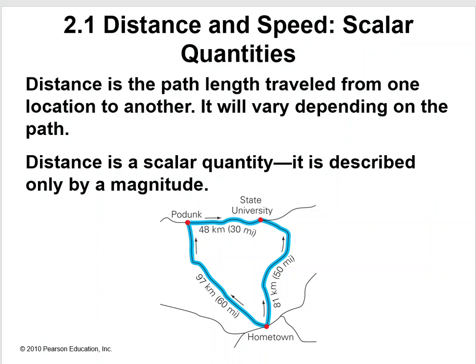Distance and speed, scalar quantities. Distance is the path length traveled from one location to another. It will vary depending upon the path. Distance is a scalar quantity. It is described only by magnitude.